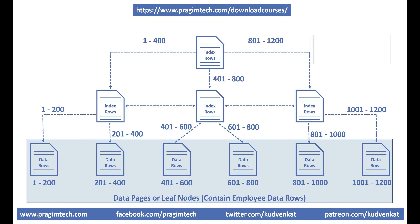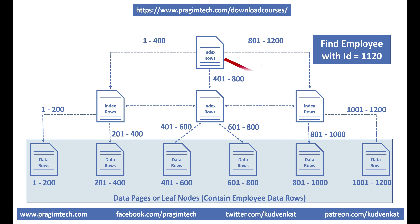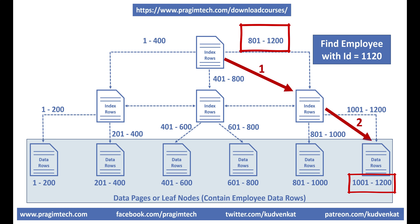For example, let's say we want to find the employee row with employee ID 1120. The database engine starts at the root node and picks the index node on the right, because it knows that node contains employee IDs from 801 to 1200. From there it picks the leaf node on the extreme right, where employee data rows from 1001 to 1200 are present. The data rows in the leaf node are sorted by employee ID, so it's easy to find the employee with ID 1120. Notice — in just three operations, SQL Server is able to find the data we're looking for, making use of the clustered index.